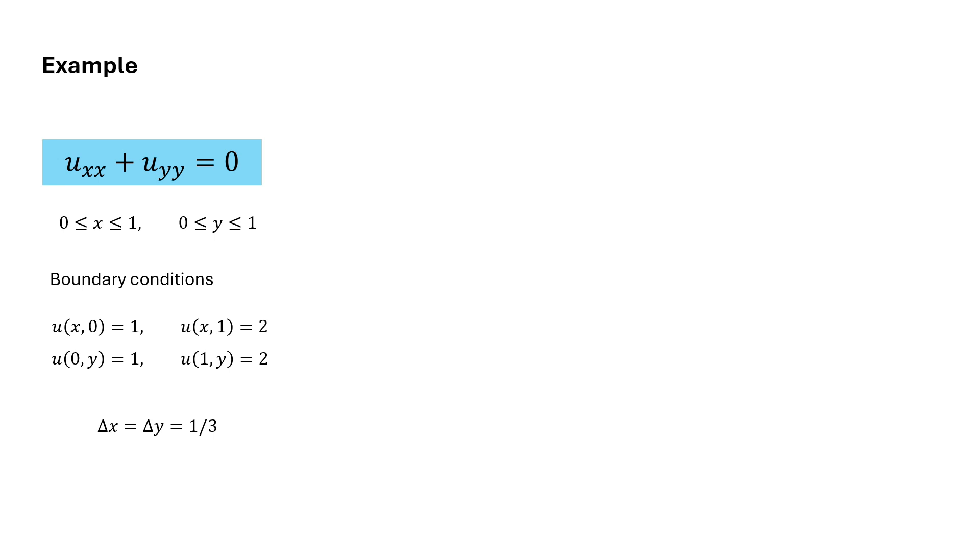We will use the basic Jacobi iteration scheme here. Boundary conditions are known, so boundary nodes will have these fixed values. All internal nodes are initialized with some guess value. In this case we will use zeros as the guess value.